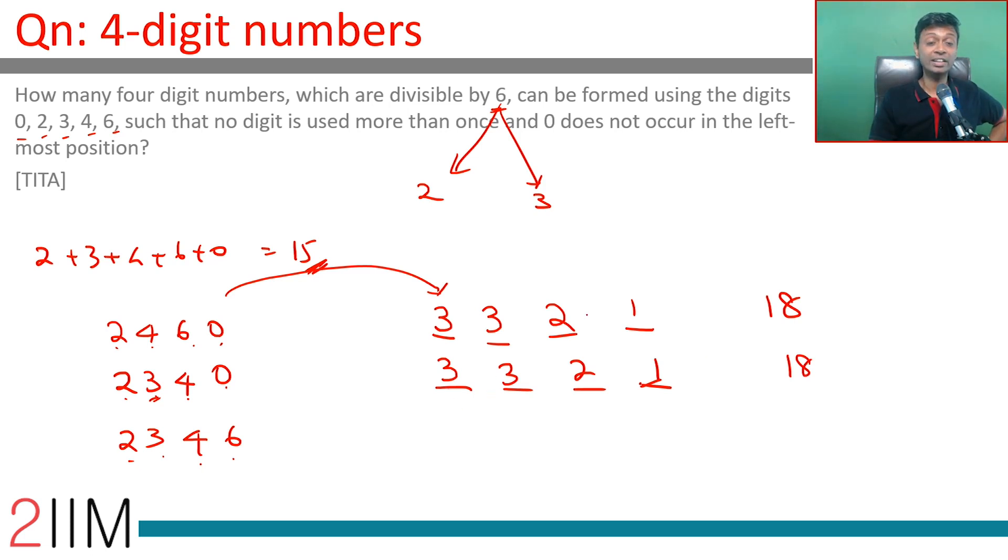Of this 18, there will be some combination where the last digit is 3. And that means 2, 4, 0 go here. But 0 cannot go into the first slot. So 2 possibilities here, 2 possibilities here, 1 possibility here. 4 such numbers are possible. We're talking about 2, 0, 4, 3; 4, 0, 2, 3; 2, 4, 0, 3; 4, 2, 0, 3. Subtract these 4. 14 numbers are possible.